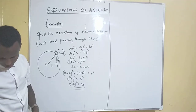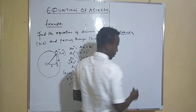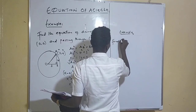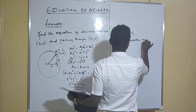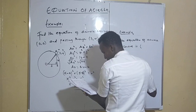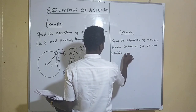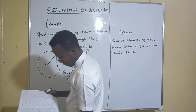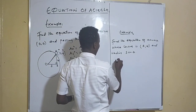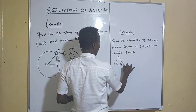We'll now proceed to Example Two, where we get the equation of a circle given the center and radius. Example Two: find the equation of a circle whose center is at five, four and radius is three units. Our center is five comma four — these are values a and b — and our radius is three units.